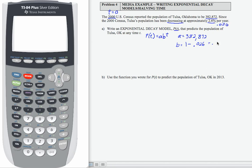which is 0.974. To write my function then, using proper function notation, I write P(t) equals 382,872, that's my a value, b is 0.974, and our exponent is t. So there is my function, and it is exponential decay because the b value is less than 1.